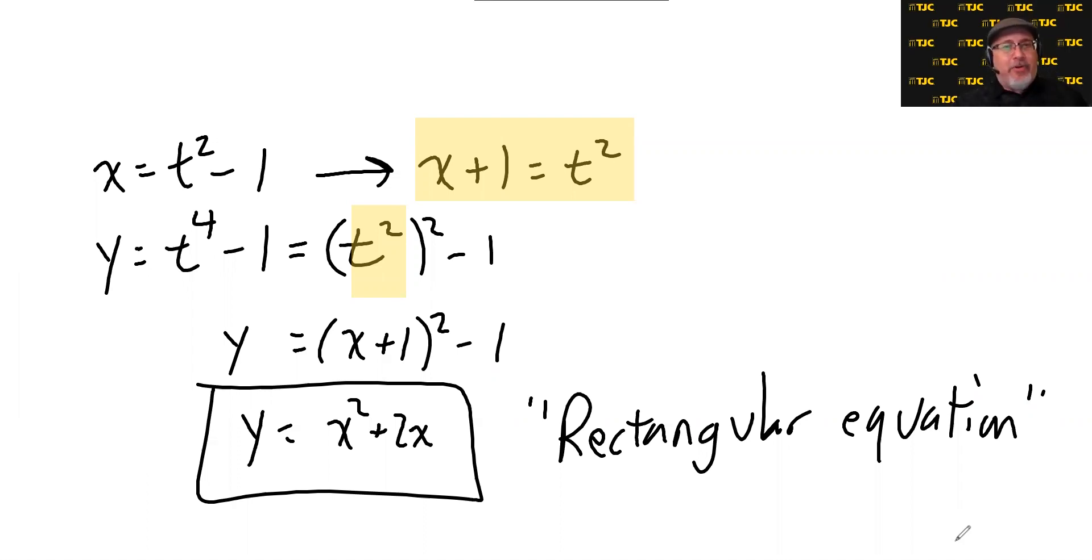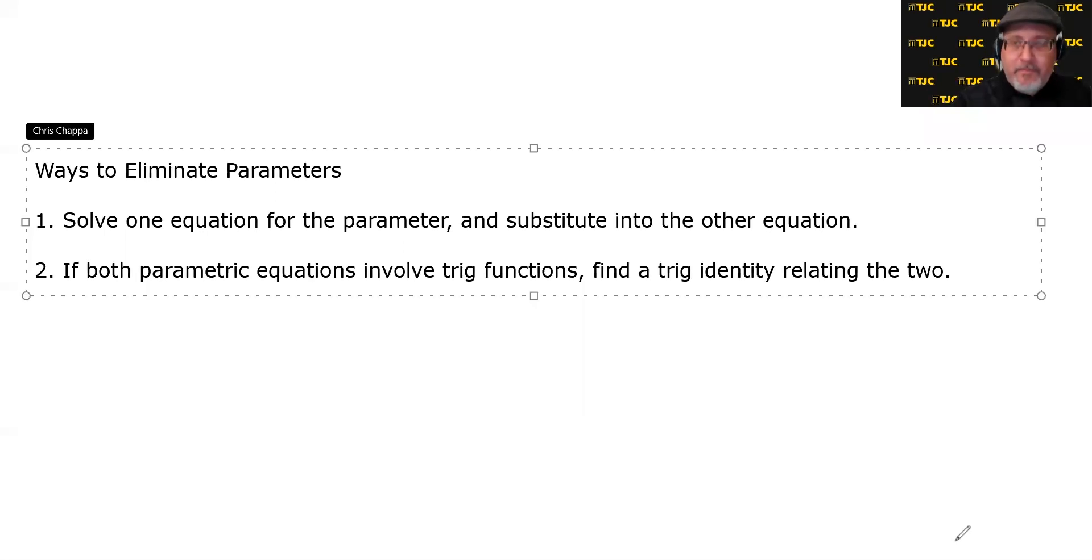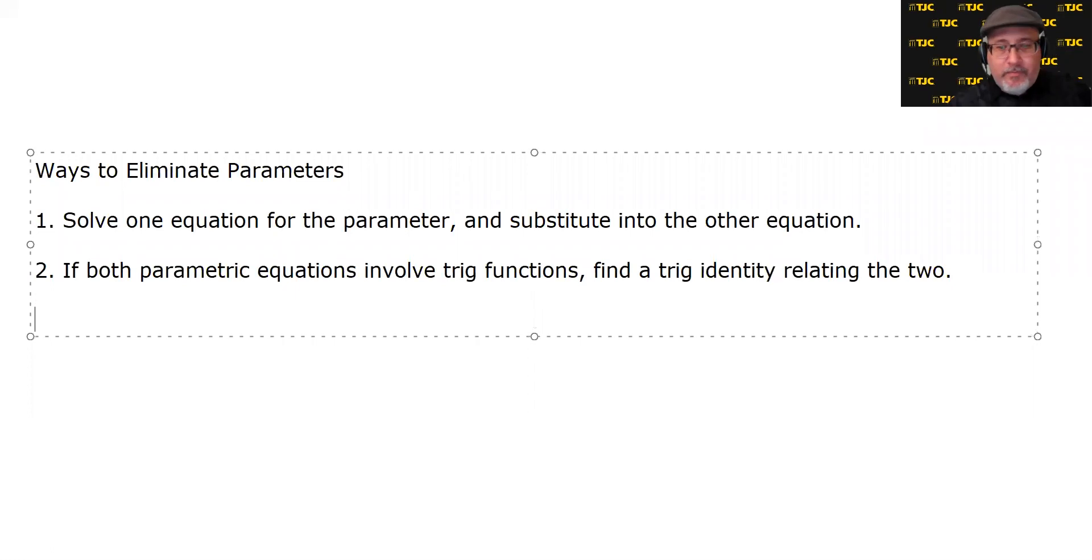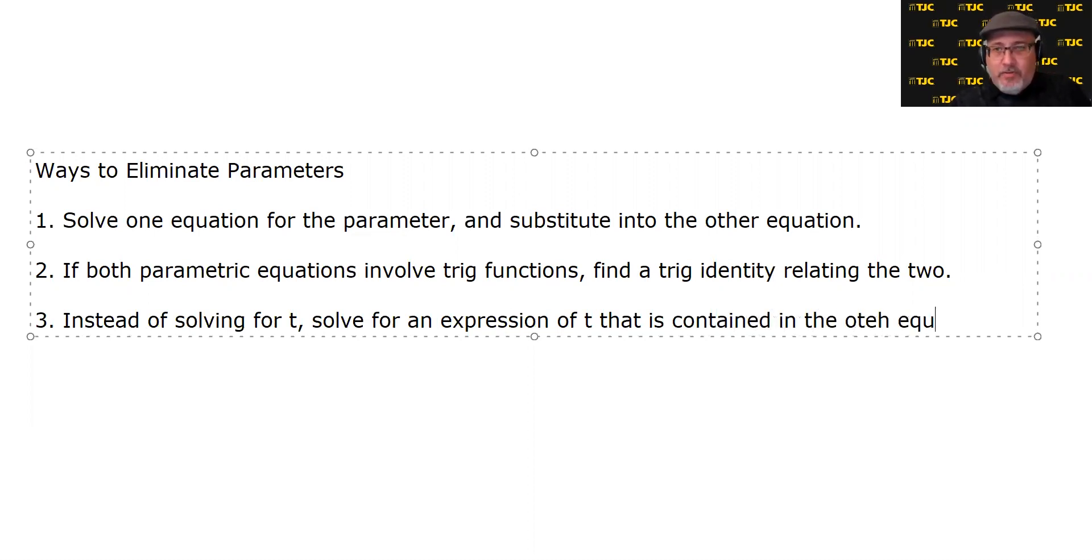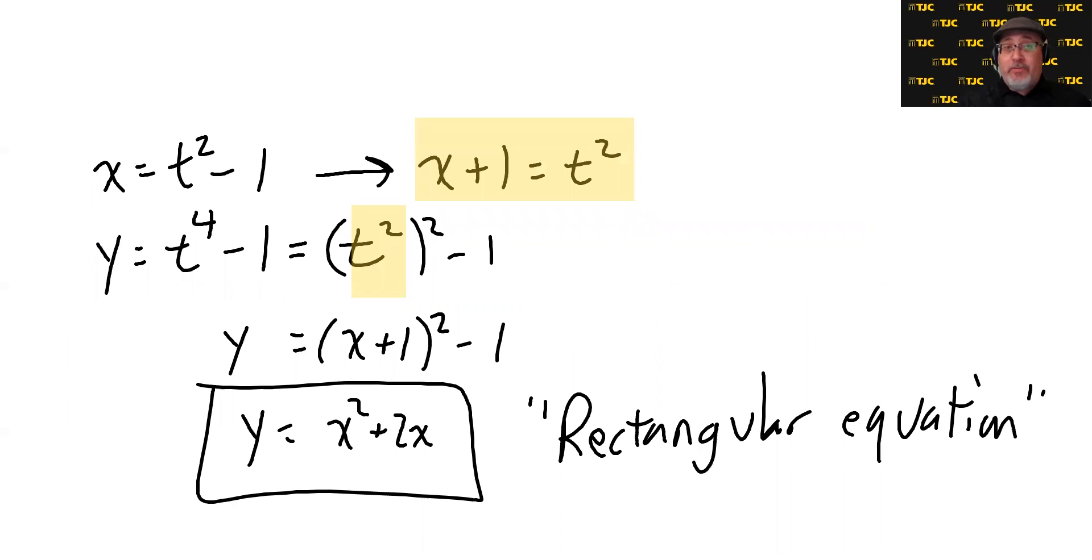But when you eliminate a parameter like we just did, but your original parametric equations had some sort of restriction, either explicitly stated or implied, then you got to be careful not to think that this equation, which we're calling a rectangular equation. When you convert from parametric to rectangular, you may get a larger graph, a more complete graph, if you don't keep track of any restrictions that were on your parameter. So how can we add this to our list of ways to eliminate parameters? We didn't quite solve for t, but we solve for an expression involving t. Instead of solving for t, solve for an expression of t that is contained in the other equation. In this particular example, that means I didn't solve for t, but I solved for t squared because there was a t squared embedded in the other equation.